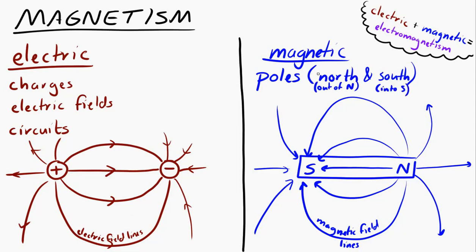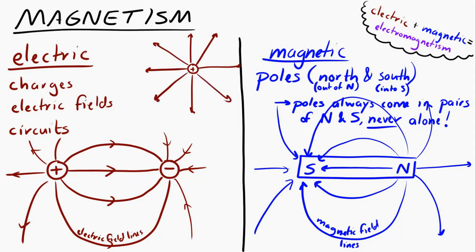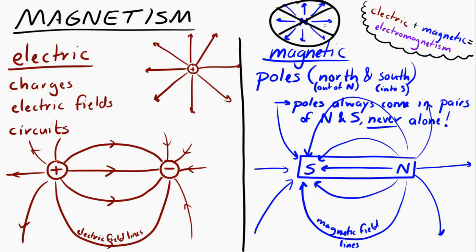An interesting fact about magnetic poles is that they cannot exist by themselves. There are no magnetic monopoles. You cannot have a north pole hanging out by itself, and you cannot have a south pole hanging out by itself — the north and south poles always go together. That is pretty different from electric charges, where it's easy to have a positive charge by itself — that's a proton — or a negative charge by itself — that's an electron. There are no such magnetic monopoles that we know of, and there is a lot of discussion about why that might be, without a lot of agreement.